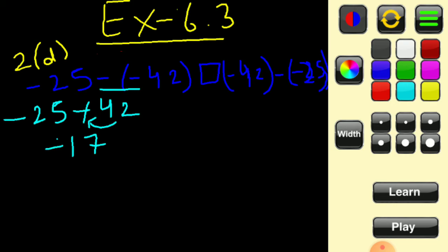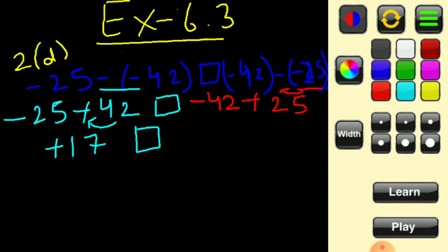The sign in front of the bigger integer is plus, so the left hand side answer is plus 17. Now for the right hand side: minus 42 is written as it is. To the left of the second bracket there is a minus sign, so minus minus becomes plus 25, giving minus 42 plus 25. We subtract because one integer is negative and the other is positive: 42 minus 25 gives 17, but the bigger integer is 42 and its sign is minus, so the right hand side answer is minus 17.